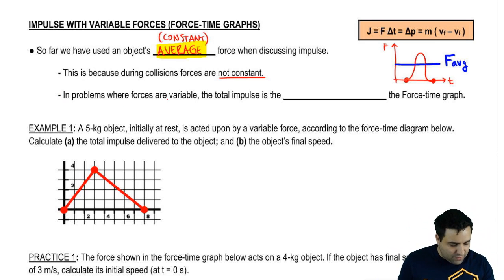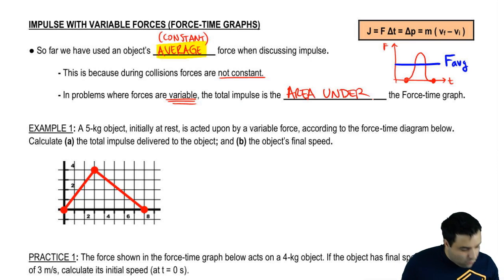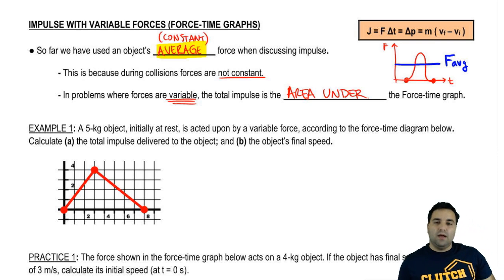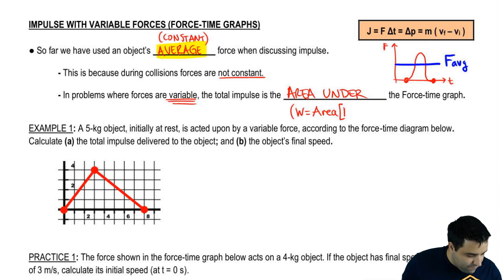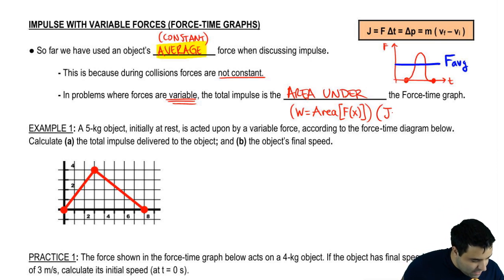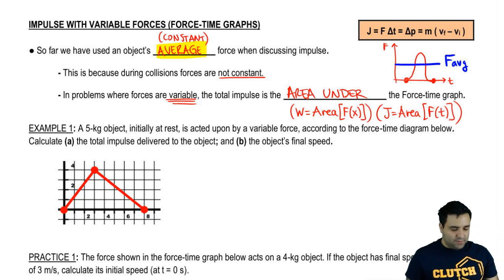Now, when we have problems where forces are variable — which is new, we're just now introducing these — the total impulse will be the area under the force-time graph. If you've done work so far, you may remember that work is the area under a force times position graph. This is similar. J is the area under the force-time graph.